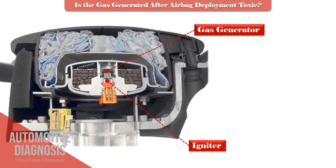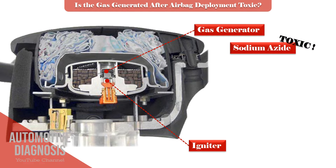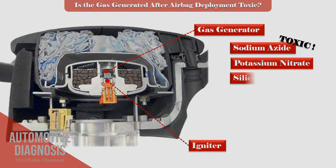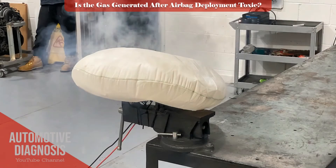What is the main gas generator agent? It is sodium azide, which can create a massive amount of gas in a very short time. The gas produced after the sodium azide explosion is toxic, so scientists were able to neutralize the sodium azide by adding potassium nitrate and silicon dioxide. So we can say that the generated gas is less toxic now — but what gases will be generated after airbag deployment?